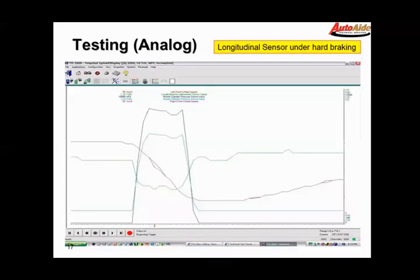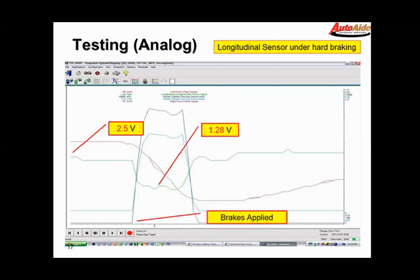If it's not possible or efficient to remove the sensor, then road testing is pretty simple. You just hook up a scan tool or a voltmeter and away you go. Here we're looking at a longitudinal sensor under hard braking. It goes along at about 2.5 volts. The brakes are applied, the voltage drops down to about 1.28 volts, and then as the car settles, the voltage rebounds to 2.5. This is a sensor doing what it should. This is a normal sort of sequence of events for one of these sensors.